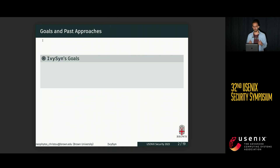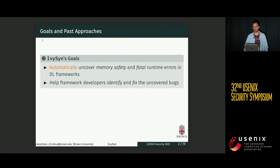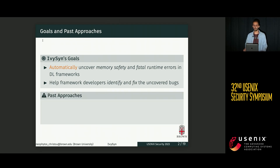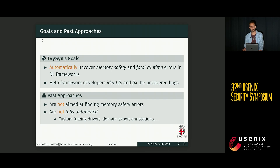To tackle this problem, we decided to work on Ivysyn with a two-fold goal. First, to automatically uncover memory safety and runtime errors in deep learning frameworks. And second, to provide framework developers with an easy way to identify and fix the bugs causing these memory safety issues. There have been approaches in the past that attempted to find errors in deep learning frameworks, but they have limitations compared to Ivysyn — they're either not specifically aimed at finding memory safety errors, or they're not fully automated, requiring manually written fuzzing drivers.